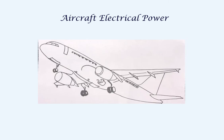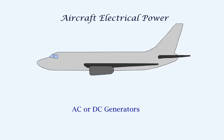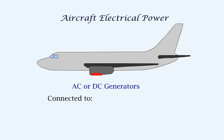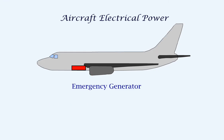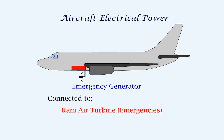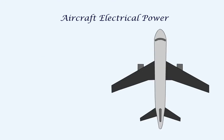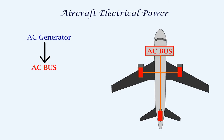Now, let's look at the electrical system in bigger aircraft. In multi-engine jet aircraft, we can have AC or DC generators. Individual generators are connected to the engines or to the APU for normal operation. In some aircraft, a separate generator may be installed and connected to a ram air turbine for power generation during certain emergencies.